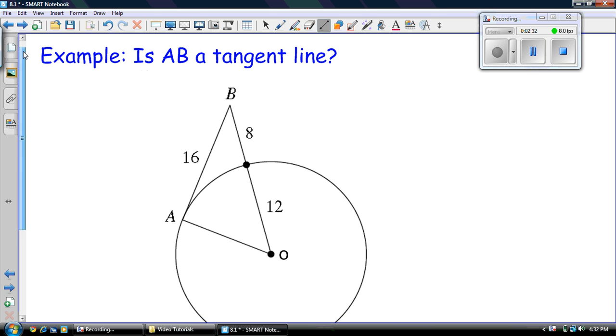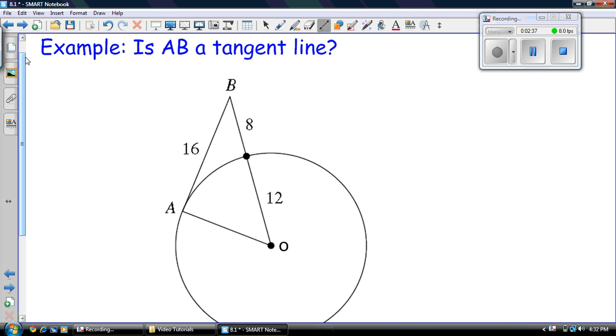So this will ask you: is AB a tangent line? So what do we know about tangent lines? Well, we know a tangent line touches the circle at only one point. We also know a line from the center to the tangent point makes a right angle. So if AB is a tangent line, then there should be a right angle right here. And of course, if there's a right angle, Pythagorean theorem is true.